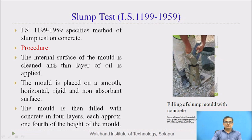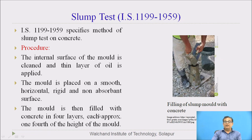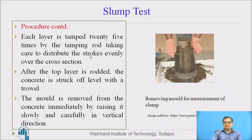Step number 1: the internal surface of the mould is first cleaned and then a thin layer of oil is applied to the internal surface. The mould is then placed on a smooth, horizontal, rigid and non-absorbent surface. The internal surface is oiled so that concrete does not stick to it after the test. The mould is filled with concrete in 4 layers — every one-fourth height of the mould is tamped with the tamping rod 25 times. Tamping should be done evenly over the cross section. After the top layer is rodded, the concrete is struck off level with a trowel.